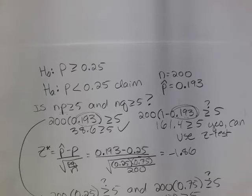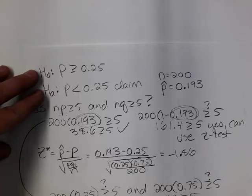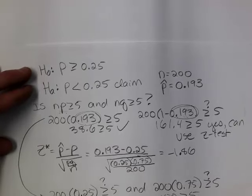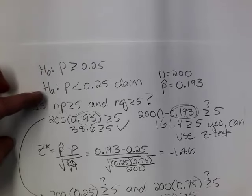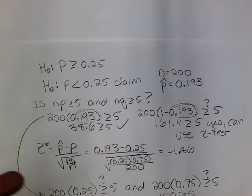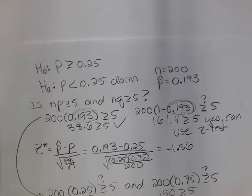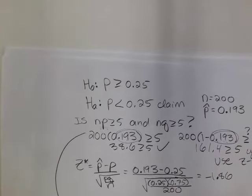If I'm rejecting the null hypothesis, am I supporting the researcher's claim? Yes — because in this case the claim was the alternative. So there are two parts to our decision: we either reject or fail to reject the null, and then we decide whether the claim is supported. Our decision is to reject the null and support the claim.